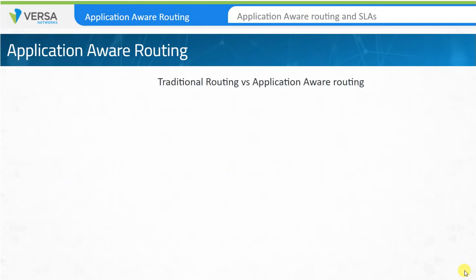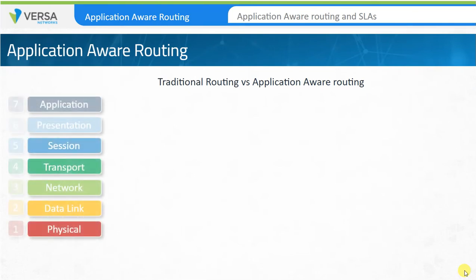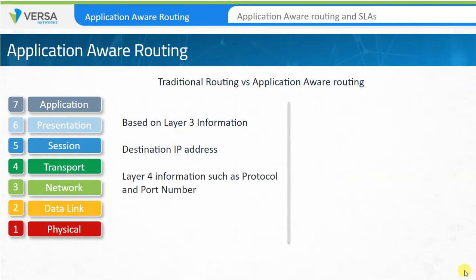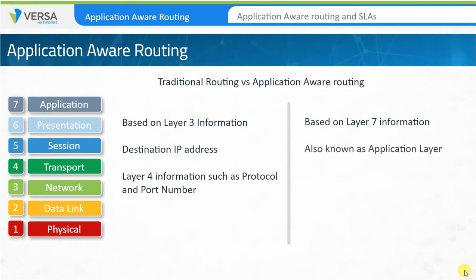How does application-aware routing differ from traditional routing? A traditional branch router performs routing based on Layer 3 information — specifically, the destination IP address present in the IP header of the data packet. Some implementations allow a CPE to make a forwarding decision based on Layer 4 information, such as protocol and port number. Application-aware routing capability allows a CPE to make forwarding decisions based on Layer 7 information, also known as application layer information, which is present in a data packet.